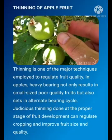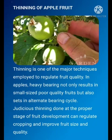Thinning. Thinning is one of the major techniques applied to regulate fruit quality. In apples, heavy bearing not only results in small-sized, poor-quality fruits but also sets an alternate bearing cycle. Judicious thinning done at the proper stage of fruit development can regulate cropping and improve fruit size and quality.